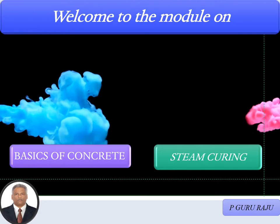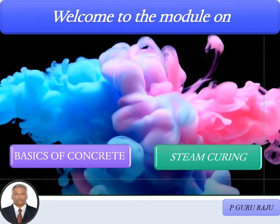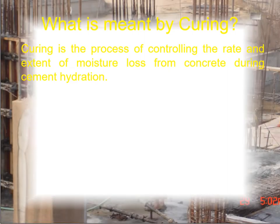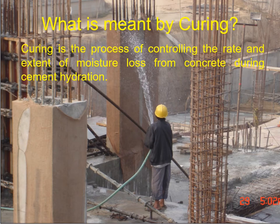Welcome to the module on basics of concrete. Today we will be discussing steam curing. Curing is the process of controlling the rate and extent of moisture loss from concrete during the hydration of cement. Hydration starts as soon as cement gets in contact with water, so ideally one should start curing as soon as the concrete has taken its shape in the form of various members or elements of a structure — a beam, column, slab, or whatever it is.